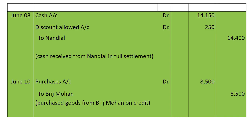June 10: purchased goods from Bridge Mohan at list price of 10,000 at 15% trade discount. 15% of 10,000 is 1,500; 10,000 minus 1,500 equals 8,500. Entry is made with rupees 8,500: Purchases account debited to Bridge Mohan 8,500. Narration: goods purchased from Bridge Mohan on credit.